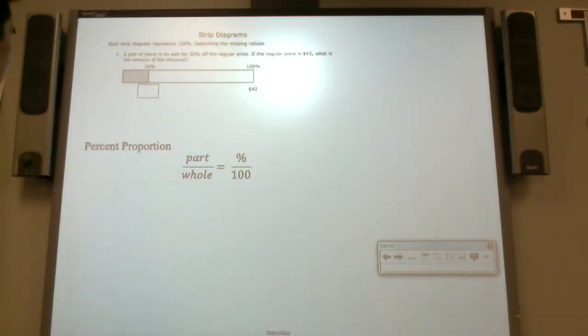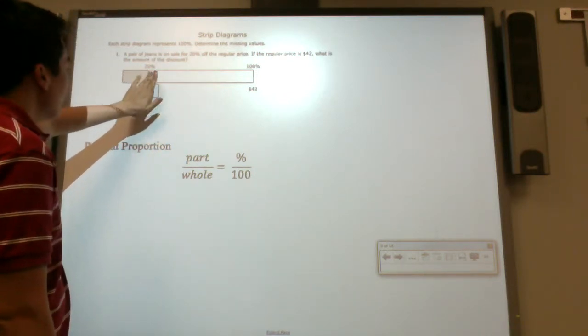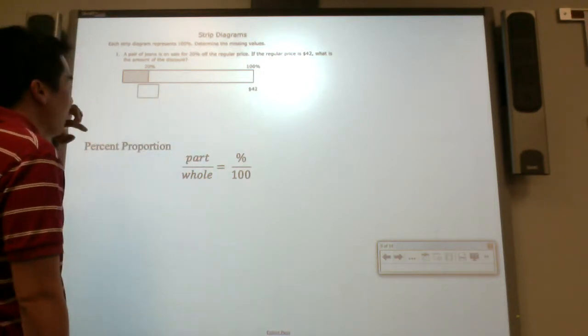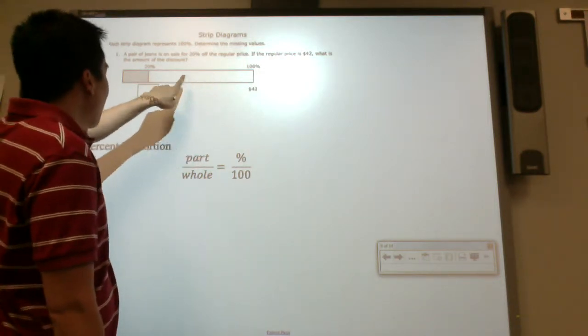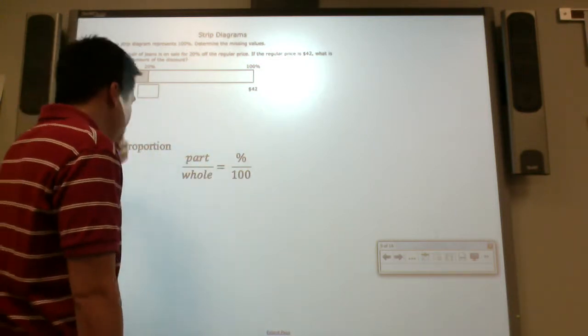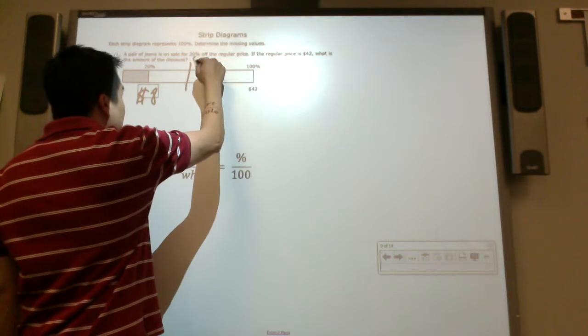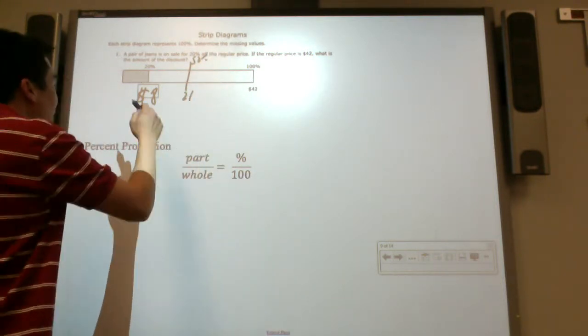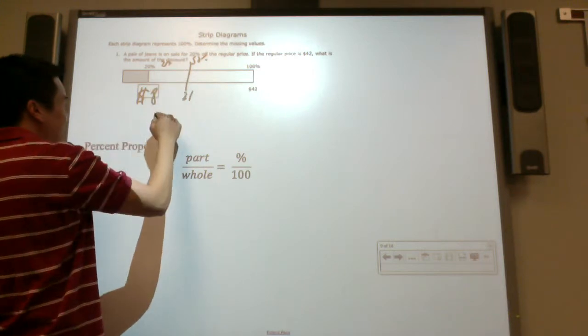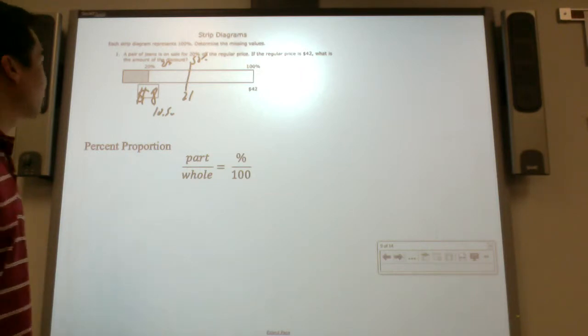Let's try one more. A pair of pants is on sale for 20% off the regular price. If the regular price is $42, what is the amount of discount? You could look at this picture. If I broke it into fifths, I could divide that by fifth and figure out what it is. I don't know. I'll just say $8 is my guess for now. I know 50% is $21 and 25% is like $10.50. I'll say $8. I'm just estimating now.